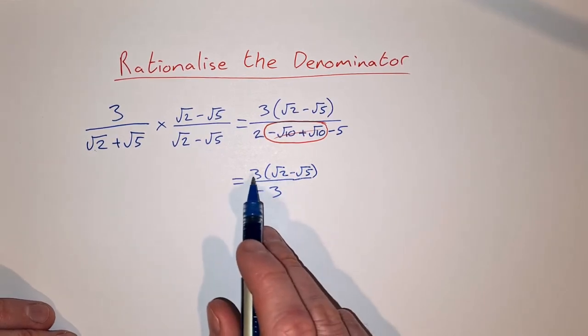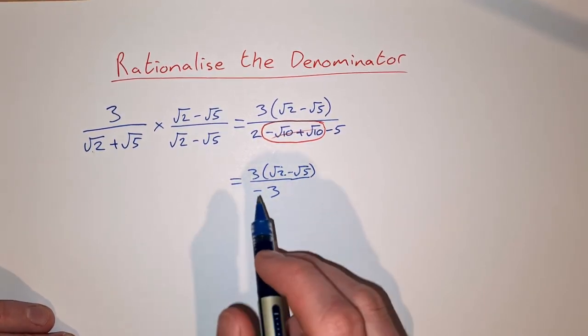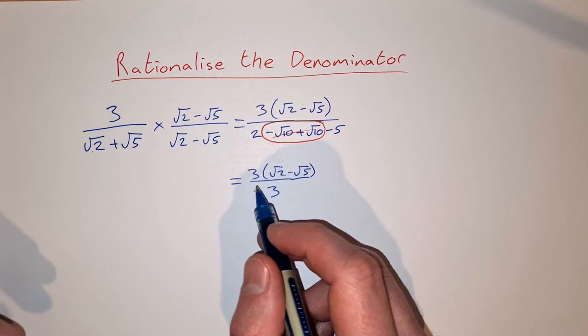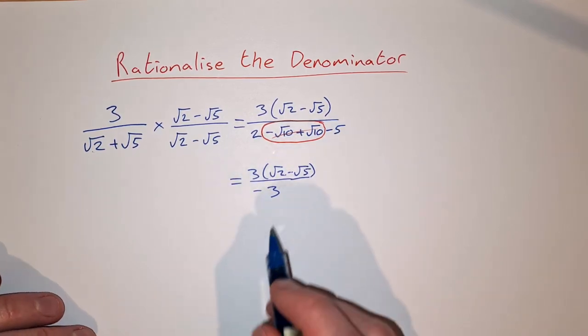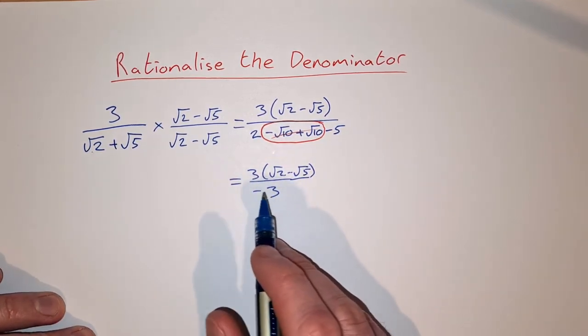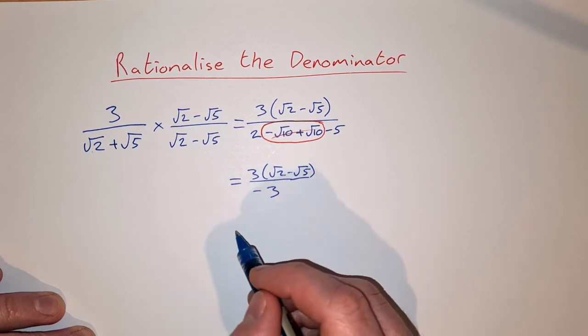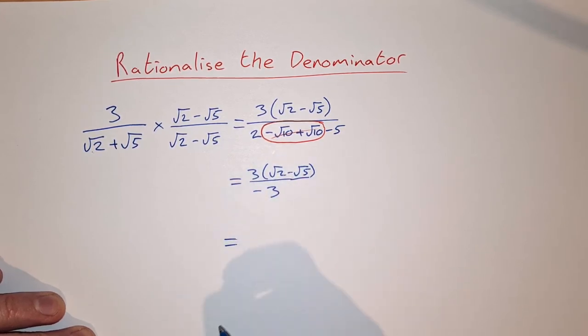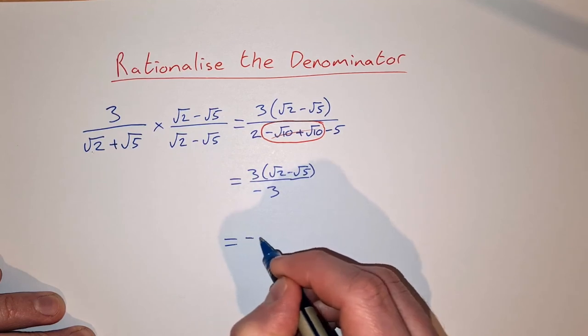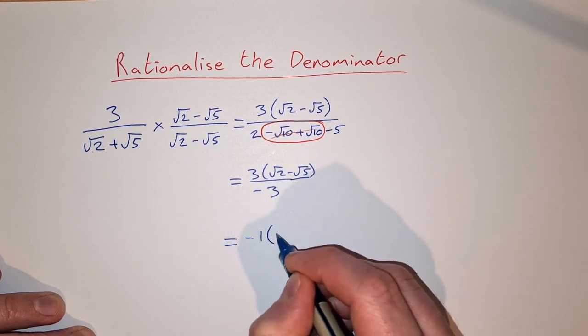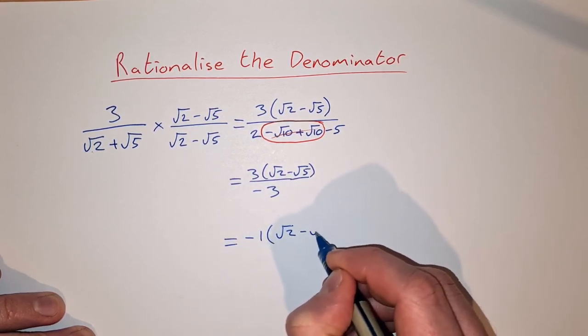And then we can simplify a bit further. We can divide above and below by 3, or by minus 3 rather to do it in one go. Divide the bottom by minus 3 you get 1. Divide the top by minus 3 you get minus 1, so it's minus 1 times root 2 minus root 5.